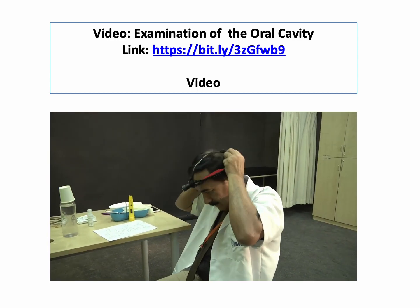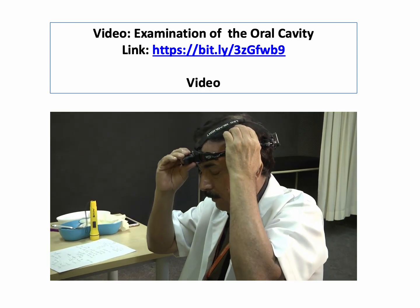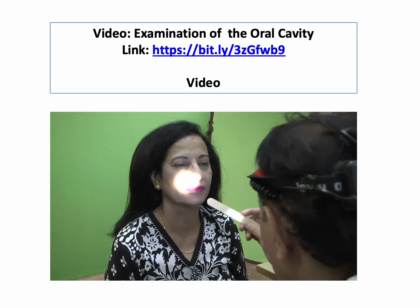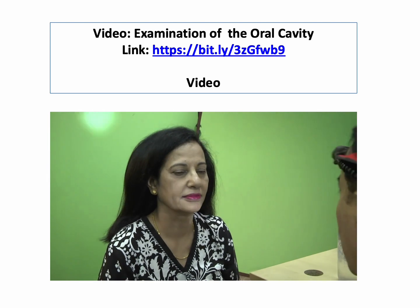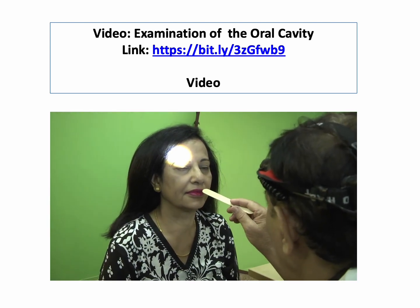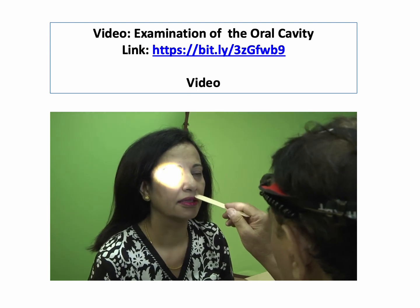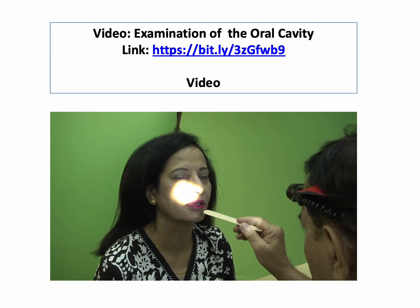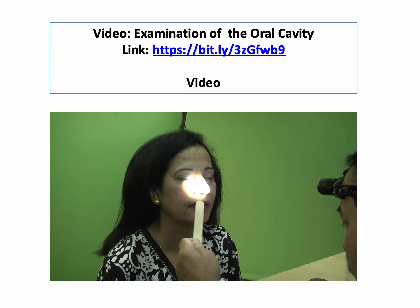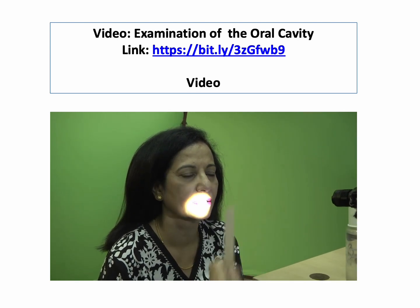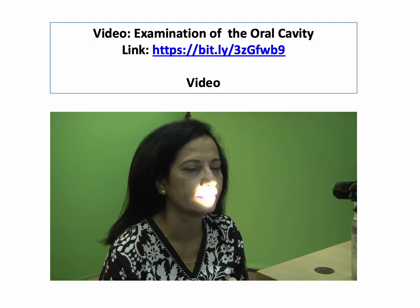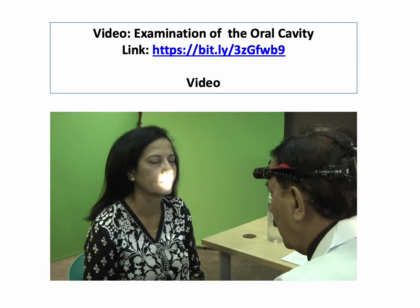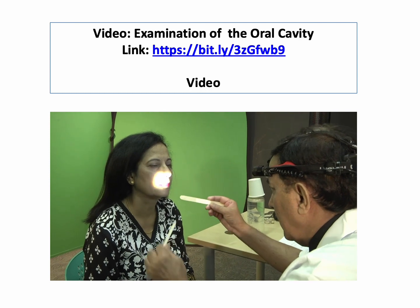The examination begins with inspection of the lips. The lips have a mucosal part and a skin part, and the line between the mucosa and the skin is the vermilion line. We look at lesions that may occur here — squamous cell carcinoma or basal cell carcinoma. At the angle of the mouth, there may be angular cheilitis, blisters, or lesions as a result of viral infection.